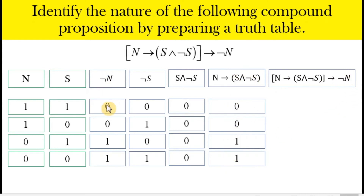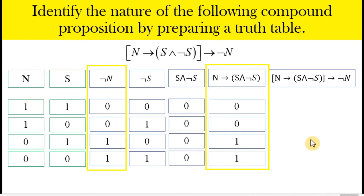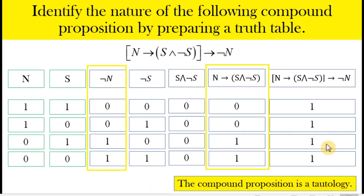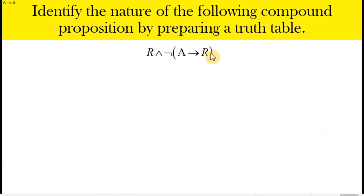We are now ready to identify the truth values of the overall given proposition. The proposition is an implication whose hypothesis is the entire sub-proposition we identified earlier, and whose conclusion is not n — the negation of n. For an implication, it is only false if the hypothesis is true but the conclusion is false. There is no such instance here — whenever the hypothesis is true, the conclusion is also true. Therefore, this compound proposition is always true, and we call it a tautology.